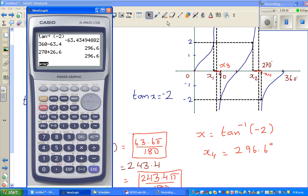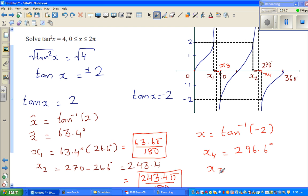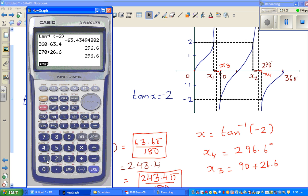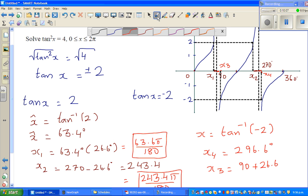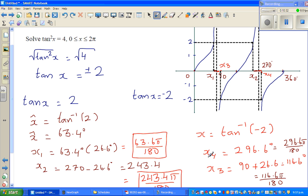And the other angle, I'm making x3, would be 90 plus 26.6. So 90 plus 26.6 degrees, it is 116.6 degrees. So if you want to change this into radians, this is 296.6 π over 180, and this is 116.6 π over 180.